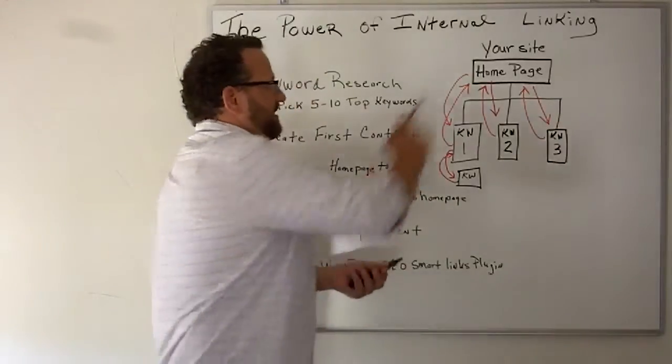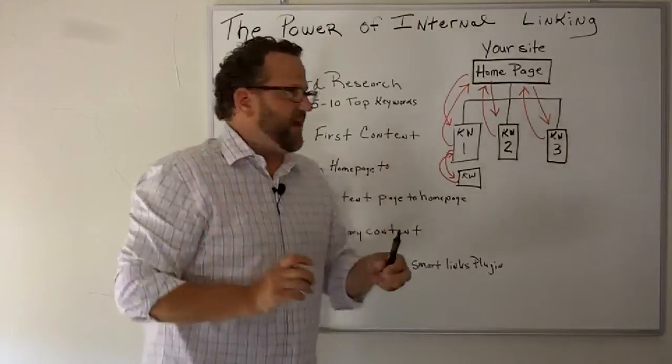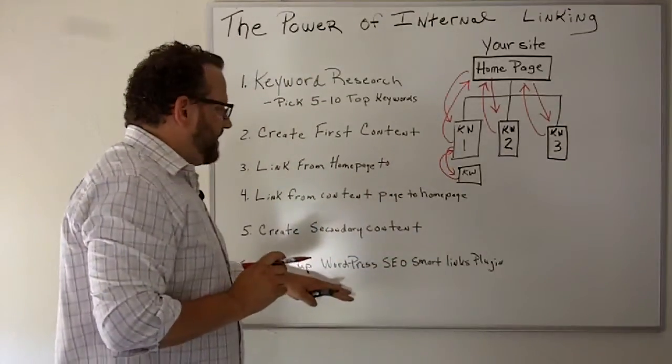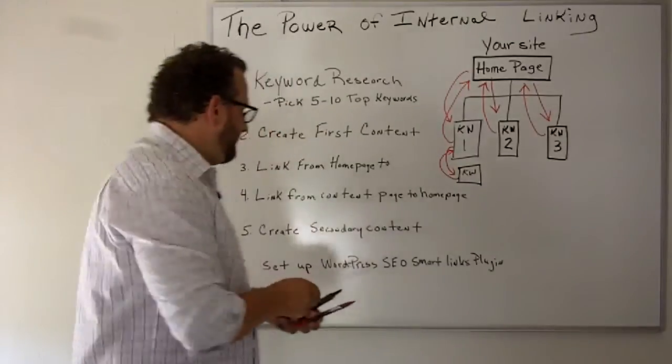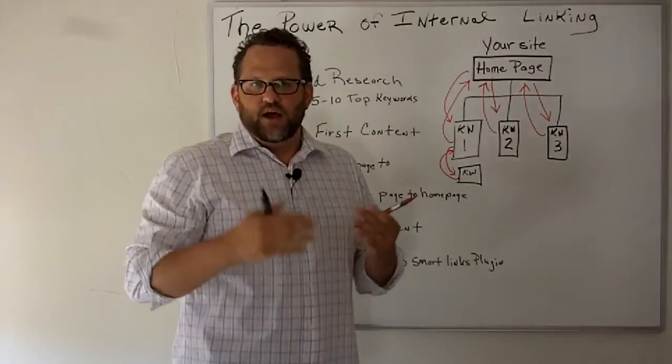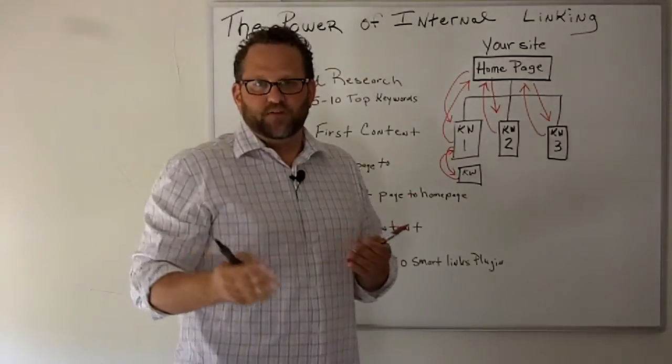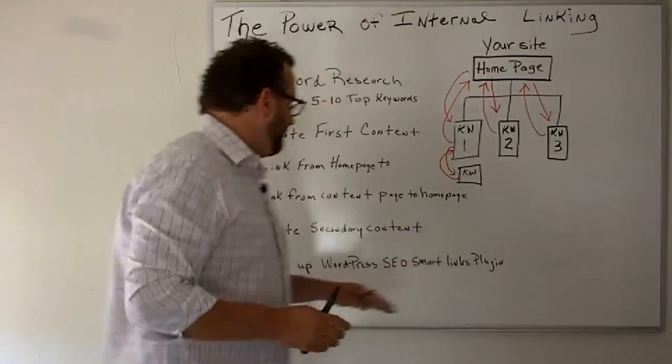So now the sixth step, okay this may seem like a lot of work and you're trying to figure out how am I going to keep track of all the pages. Well if you're running your website on WordPress, there's a WordPress plugin called SEO Smart Links. You can just go to Google and do a Google search for SEO Smart Links WordPress plugin and what this will do is actually automate this process for you.